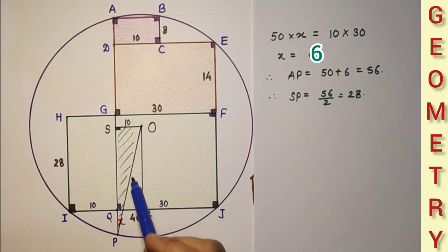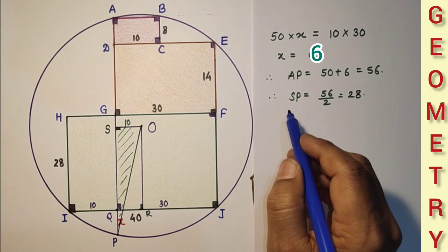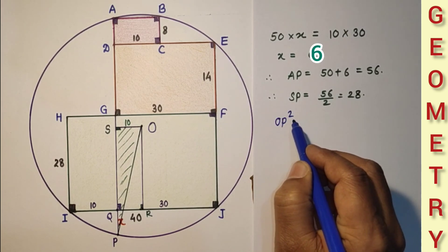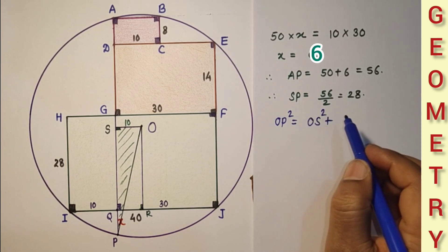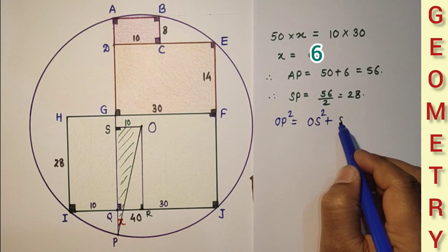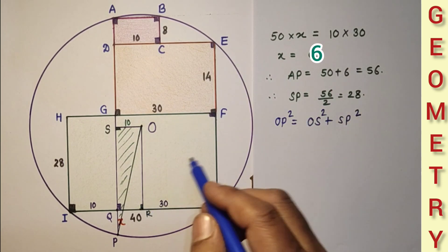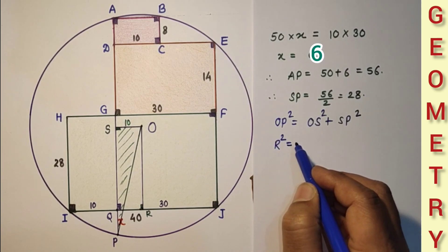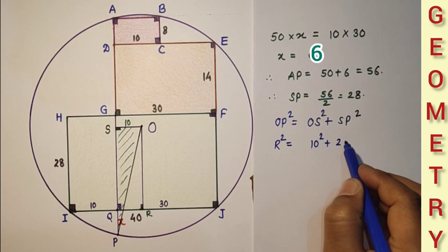Now by using Pythagorean theorem in triangle OSP, we will get OP square is equal to OS square plus SP square. OP is required radius which is to be found, so R the radius square is equal to OS is 10, 10 square plus 28 square.